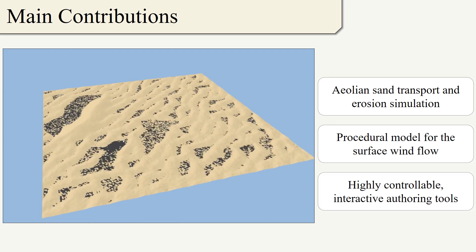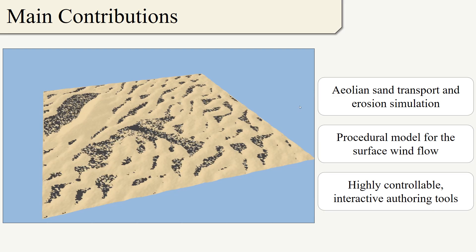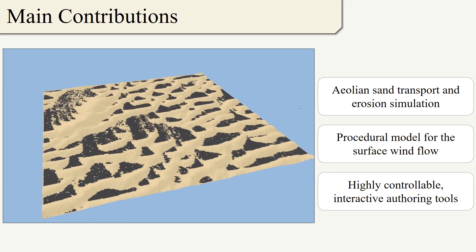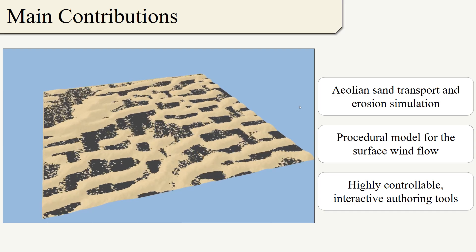Second, a procedural model for approximating the wind flow over the relief of the terrain. And third, a controllable wind model for authoring desert landscapes.